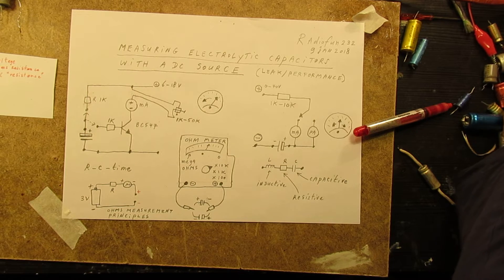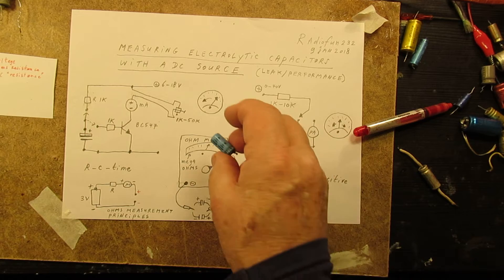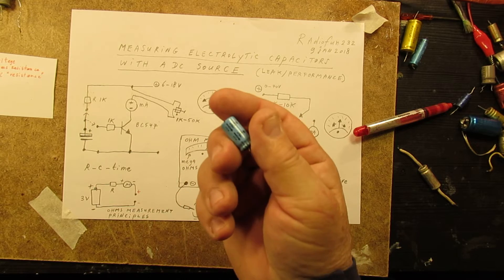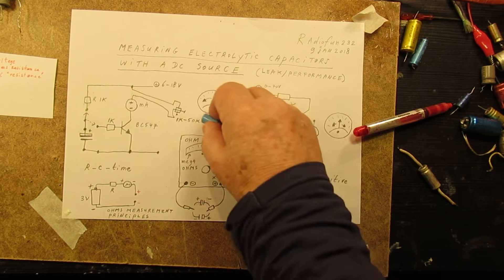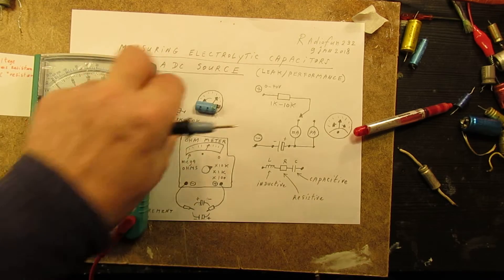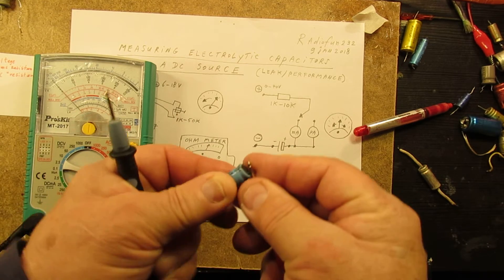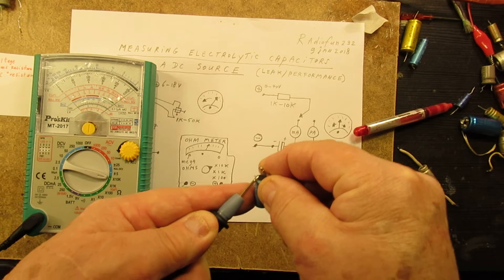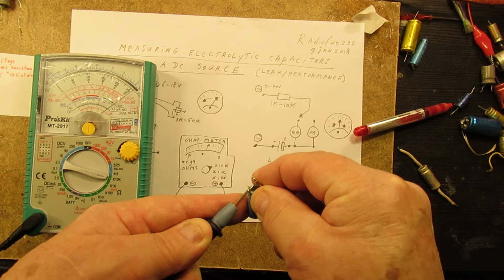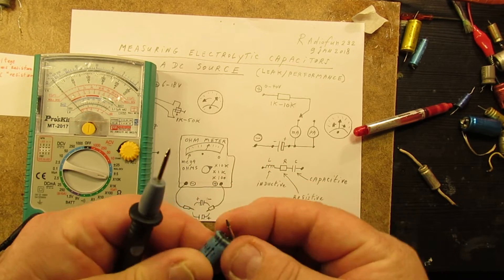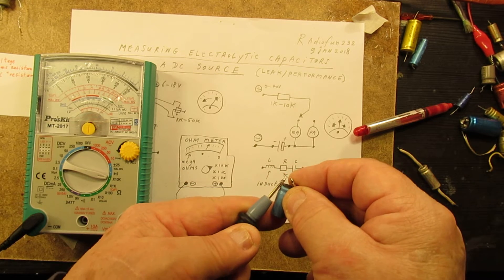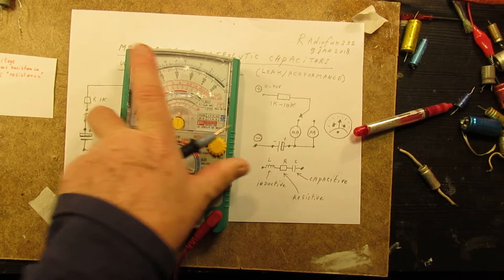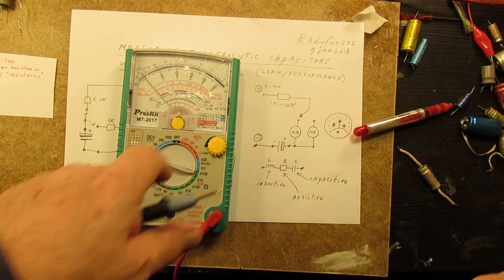I have to say, electrolytics always leak, and then especially the high microfarad capacitors. For instance, this one, 470 microfarad. When I do the same, I test it on its leak. You'll see the same now on the meter. Yes, that's correct. So this also leaks. And you even don't see the pointer move. That means it has a very high DC resistance.